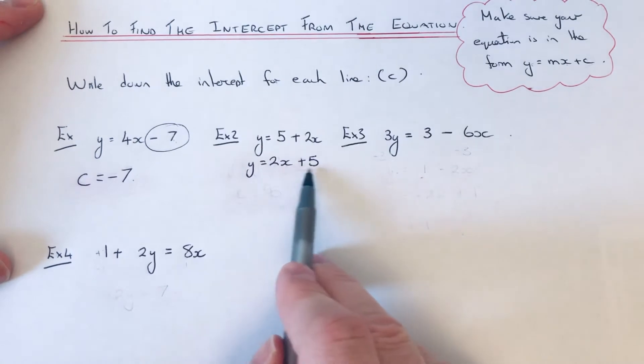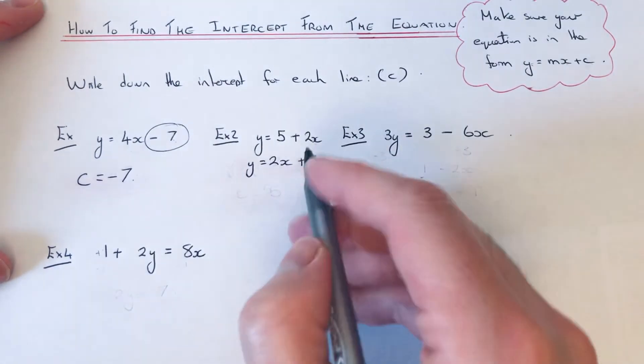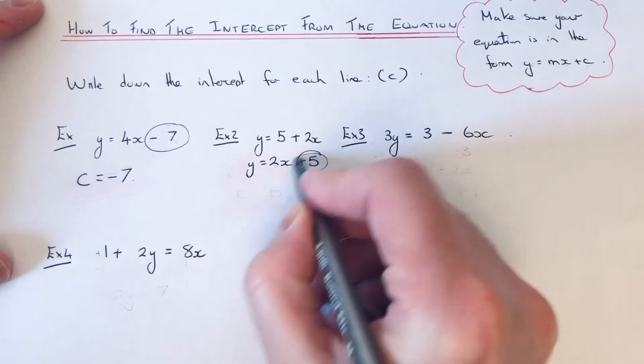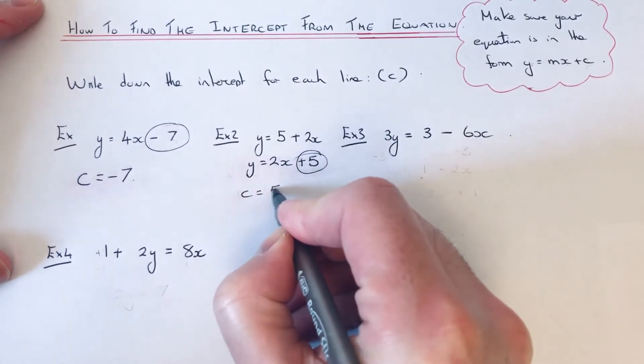It's now in the form y equals mx plus c. So again, the number at the end, which is the intercept, is plus 5.